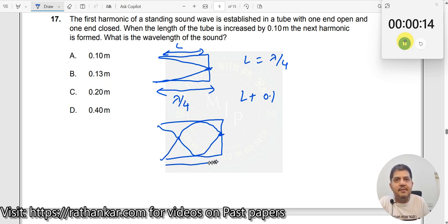What is this total length in terms of lambda? This will be lambda by 4 and this will be lambda by 2. But totally, this will be 3 lambda by 4. So I can now write this as 3 lambda by 4.